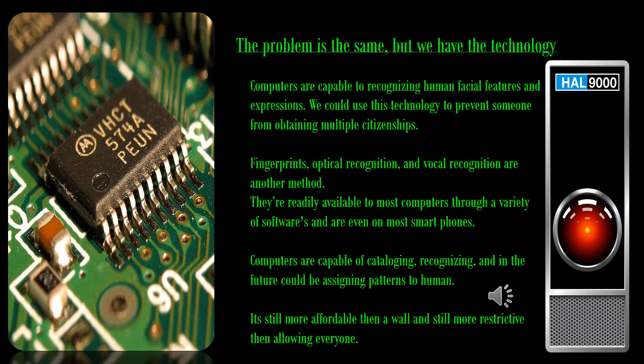Computers are capable of cataloging, recognizing, and reorganizing data. They could assign patterns, behaviors, and certain sounds to human catalogs, keeping them on file simply by observing them. In theory, this combined with a human partner could be more than enough to set up a simple system that would be cheap and effective for illegal immigrants to become legal.